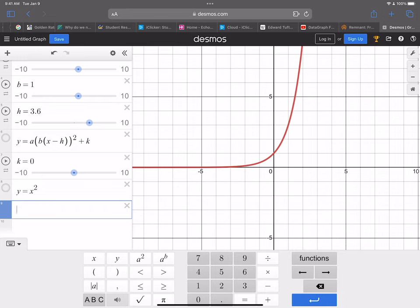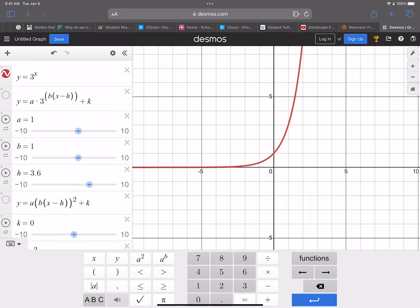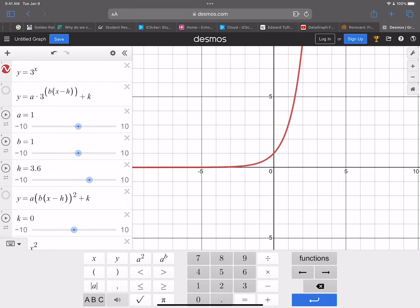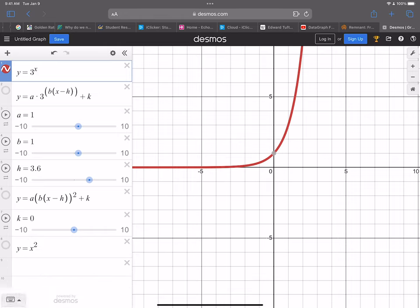So this problem is about translation again, it also has a reflection in it. Part one gives us the function f(x) = 3^x. It appears at the top of my list and it's graphed in the Cartesian coordinate system to the right of the screen.